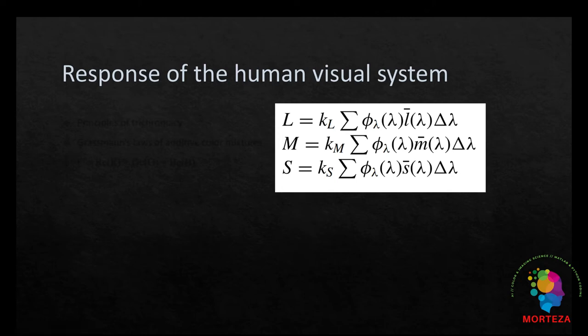But in 1931, when colorimetry was first standardized, there was no access to human visual system's cone sensitivities. Therefore, the CIE, in establishing the 1931 system of colorimetry, needed to take a less direct method.